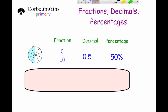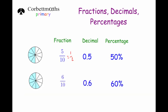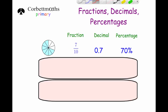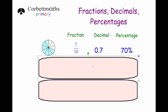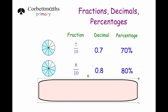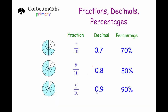Five tenths is the same as one half, which is 0.5 and 50%. Six tenths is also 0.6 and 60% — that's the same as three fifths. Seven tenths would be 0.7 and 70%. Eight tenths is 0.8 and 80%. And nine tenths is 0.9 and 90%. So those are the tenths.